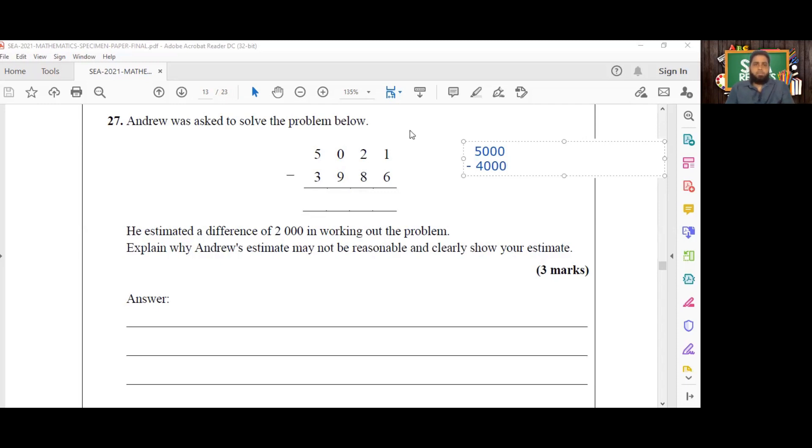So if we were to now subtract these from each other, we would get 5,000 take away 4,000. So a better estimate would be 1,000. A better estimate for this difference would be 1,000.